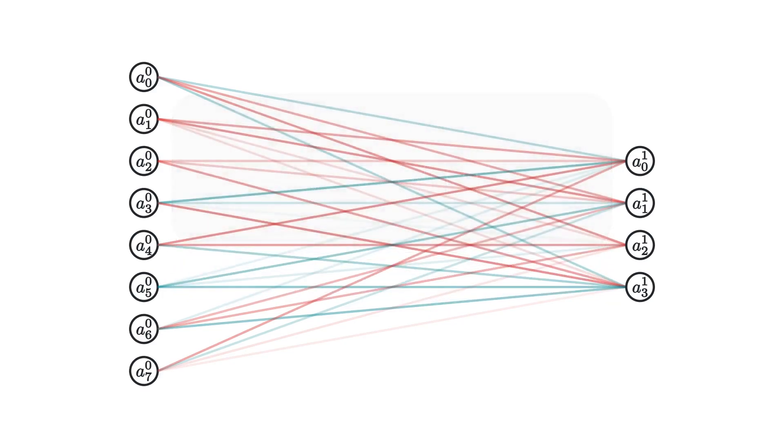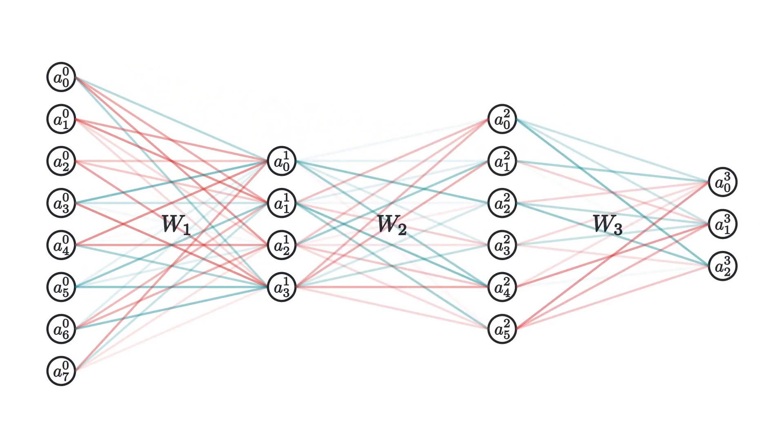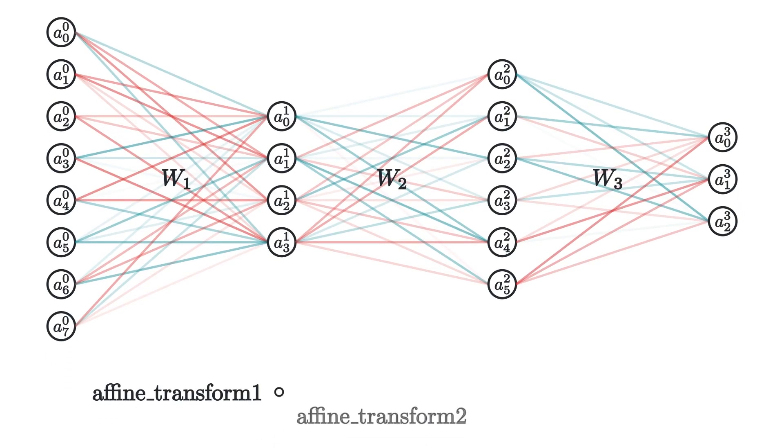So, one question that might pop up is, why do we add nonlinearities instead of just chaining these affine transformations? Well, it turns out that that's not very useful. As an affine transformation plus an affine transformation simply gives us another affine transformation. So, that way adding more layers won't actually increase our network's capacity.